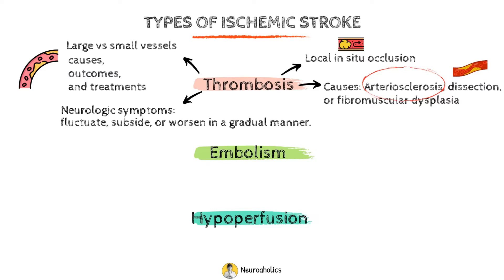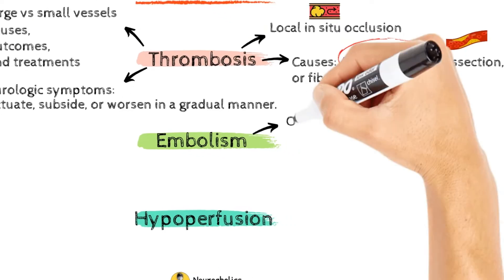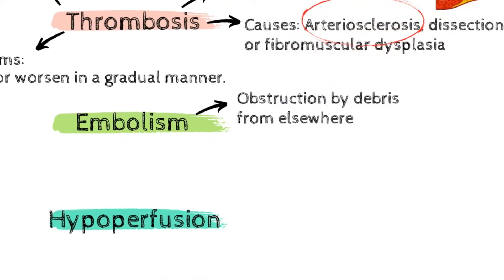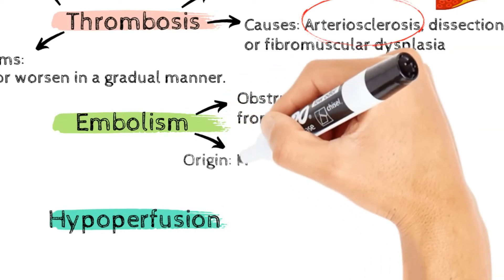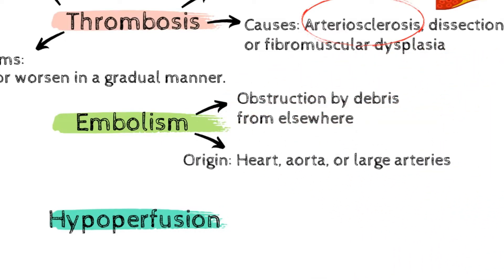The second cause of brain ischemia is embolism. Embolism is a term used to describe an obstruction of arterial supply to a specific brain area caused by debris from elsewhere. Embolic strokes may originate in the heart, aorta, or large arteries, depending on where the cause is located.